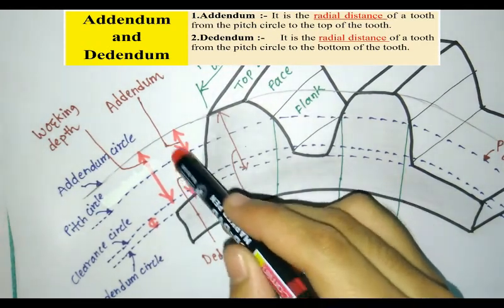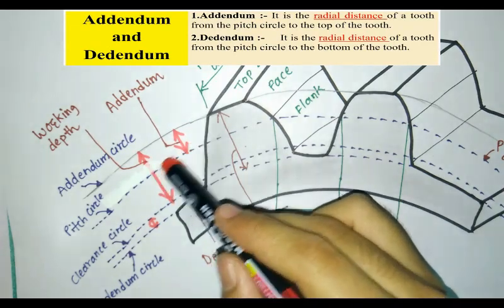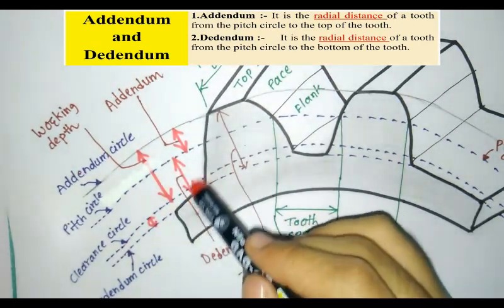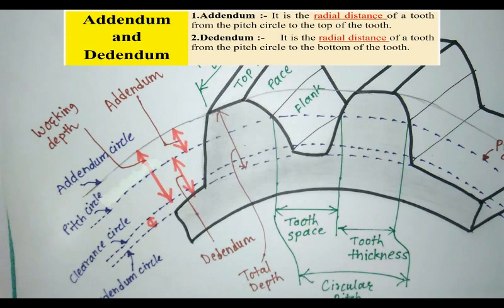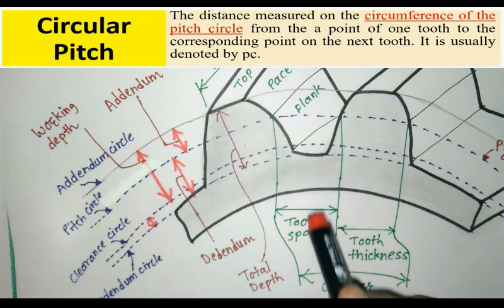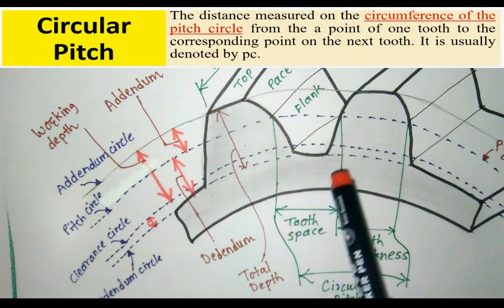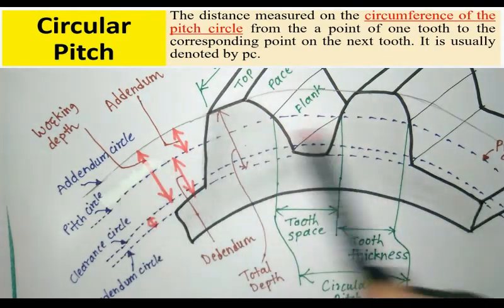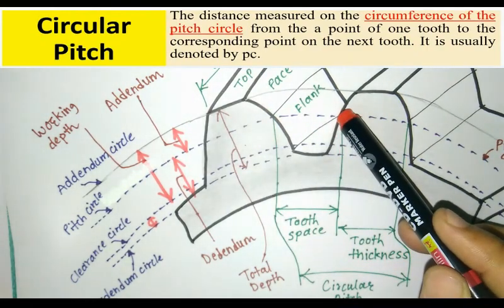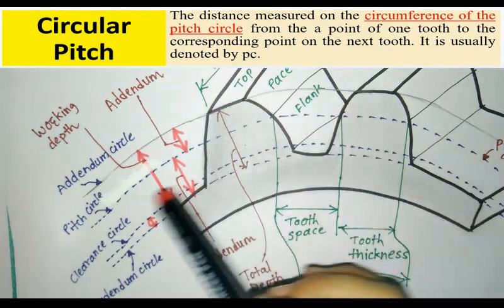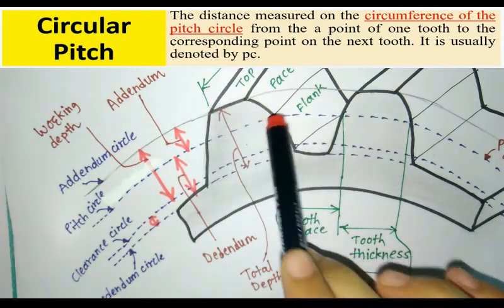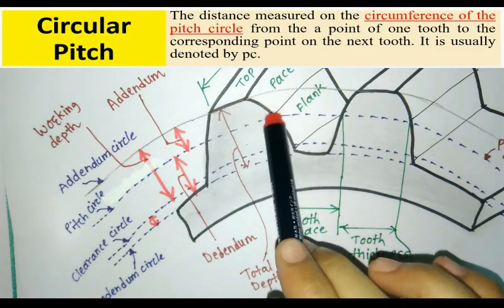Next is circular pitch. It is the distance measured on the P circle from a point of one tooth to the corresponding point on the adjacent tooth.